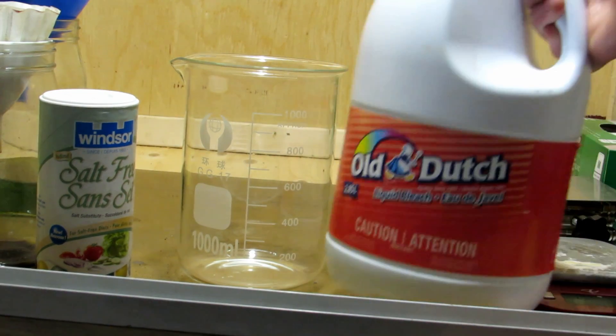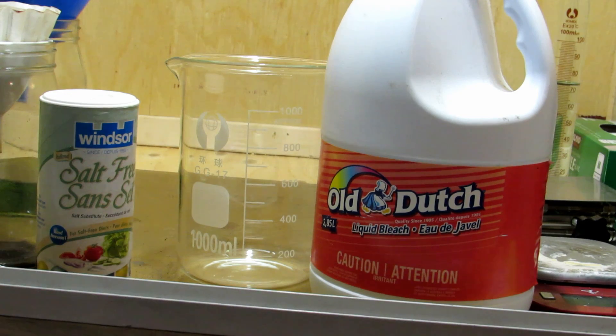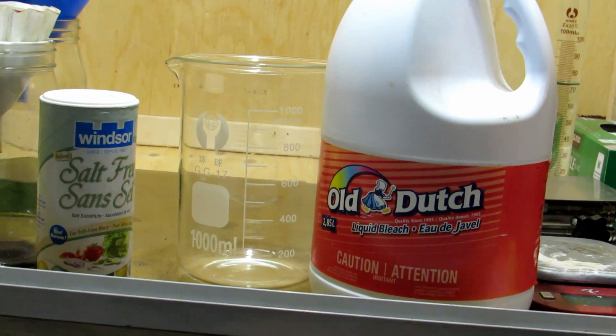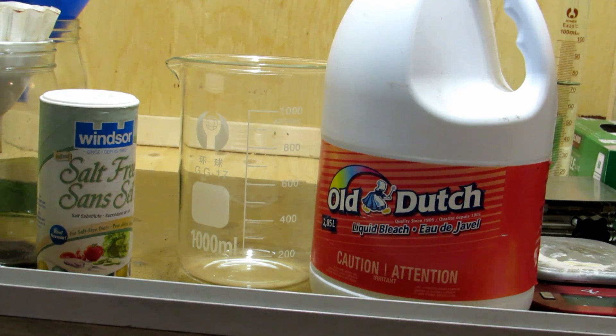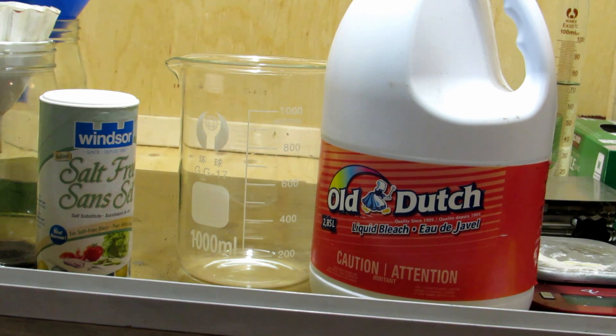This bleach here does contain sodium hypochlorite. It's not a full bottle but that shouldn't matter. I'm going to first turn on my fume hood so that dangerous bleach fumes, well they're not too dangerous, but my room doesn't get filled with bleach fumes. Then we'll take this one liter beaker here and fill it up to probably between 800 and 1,000 milliliters of bleach. Then we're going to boil it down. So I'll measure out some bleach and meet you back.